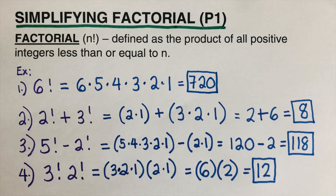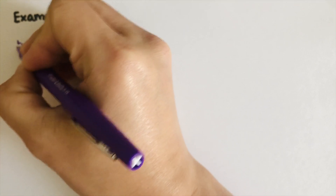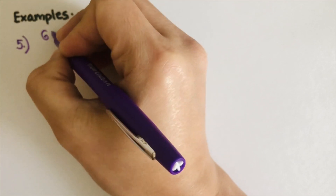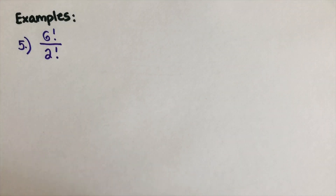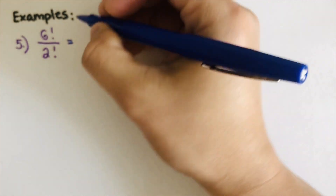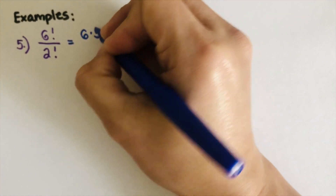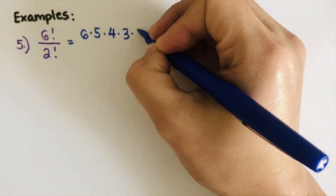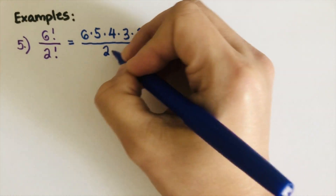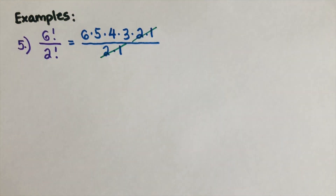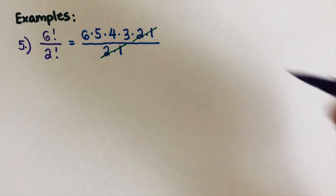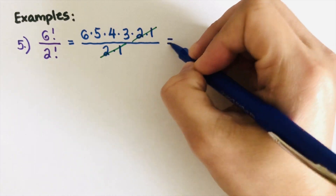Now let's look at division. Problem five: 6 factorial divided by 2 factorial. We write out 6 factorial as 6 times 5 times 4 times 3 times 2 times 1 over 2 times 1. We can cross out the 2 and 1 in the numerator with the 2 and 1 in the denominator, leaving 6 times 5 times 4 times 3, which equals 360.